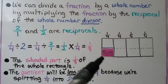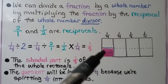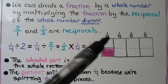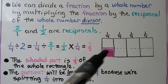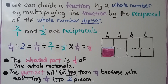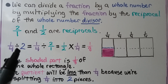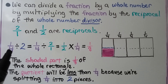We have 1 fourth of a rectangle, and if we divide it by 2 into two parts, one of those parts would be 1 eighth of the entire rectangle. The shaded part is 1 eighth of the whole rectangle. The quotient, 1 eighth, is less than 1 fourth because we're splitting the 1 fourth into two pieces — so our quotient is less than our fraction dividend.